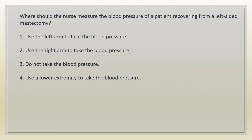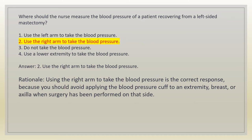Where should the nurse measure the blood pressure of a patient recovering from a left-sided mastectomy? 1. Use the left arm to take the blood pressure. 2. Use the right arm to take the blood pressure. 3. Do not take the blood pressure. 4. Use a lower extremity to take the blood pressure. Answer: 2. Use the right arm. Rationale: you should avoid applying the blood pressure cuff to an extremity, breast, or axilla when surgery has been performed on that side.